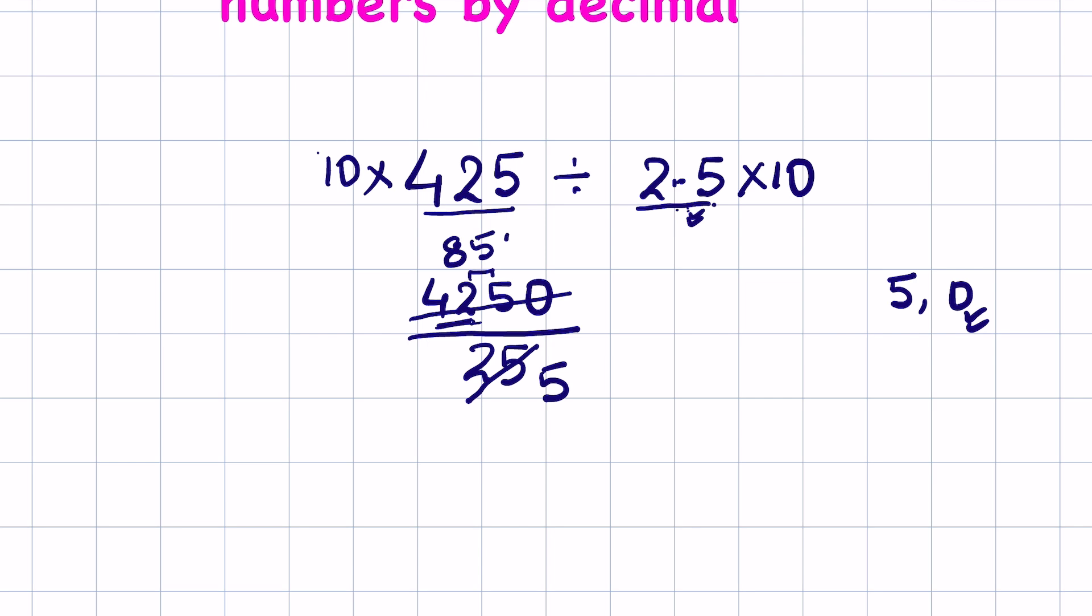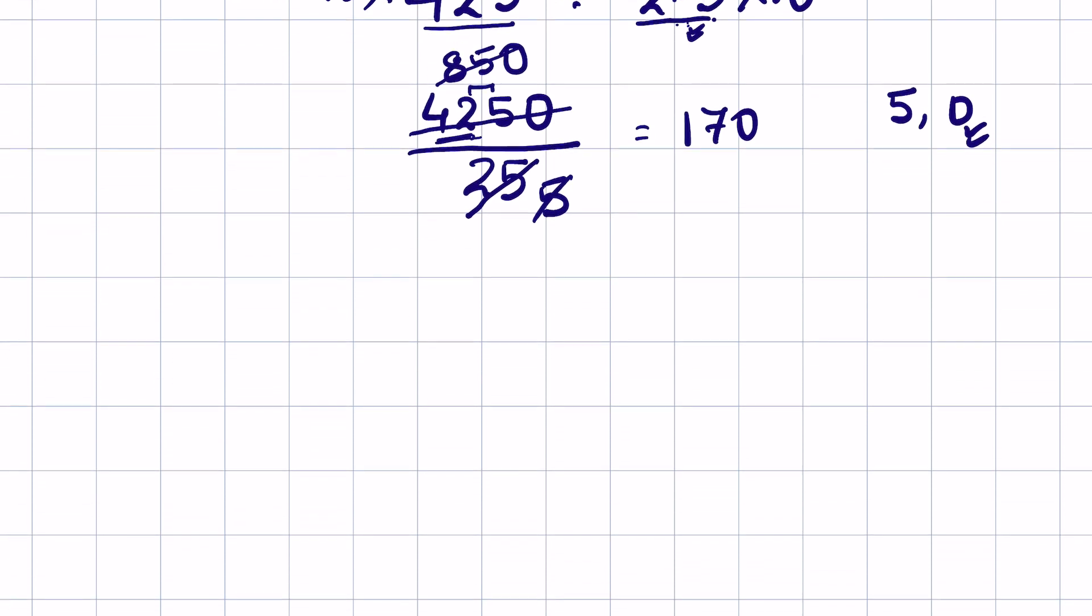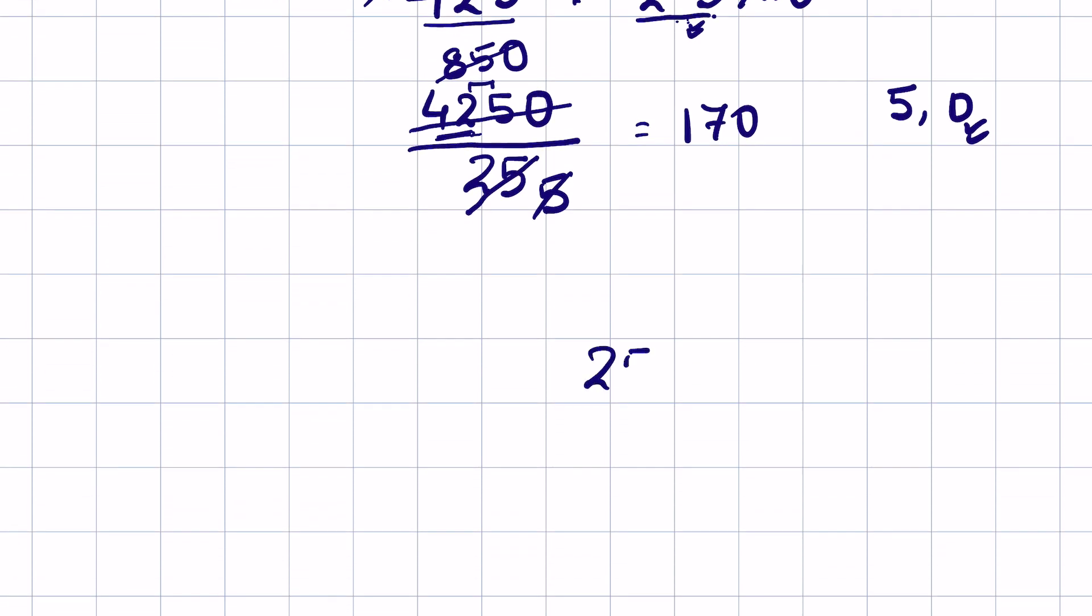Now this 2 number will become 25. 5 times 5 is 25, now again 85, that is 17 times 5 is 85, so it will be 170. Easy division. We can do the long division also. 25 into 4250 is your dividend, so 25 times 1 is 25.